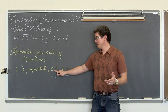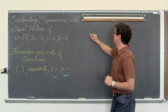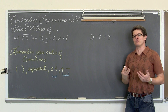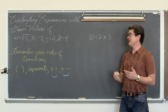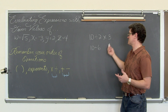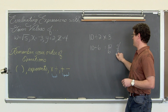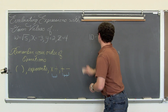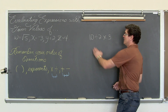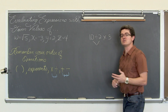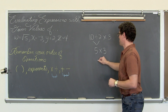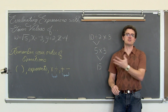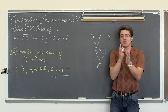If multiplication shows up first, then multiply first. If division shows up first, then divide first. For example, ten divided by two times three — if you were stuck thinking you have to multiply before you divide, you might do two times three which is six, then ten divided by six which is five thirds. That is not correct. Reading left to right: ten divided by two is five, then five times three is fifteen.